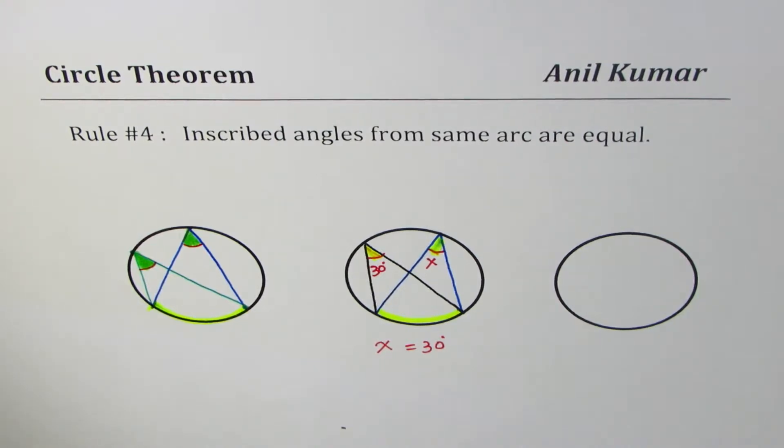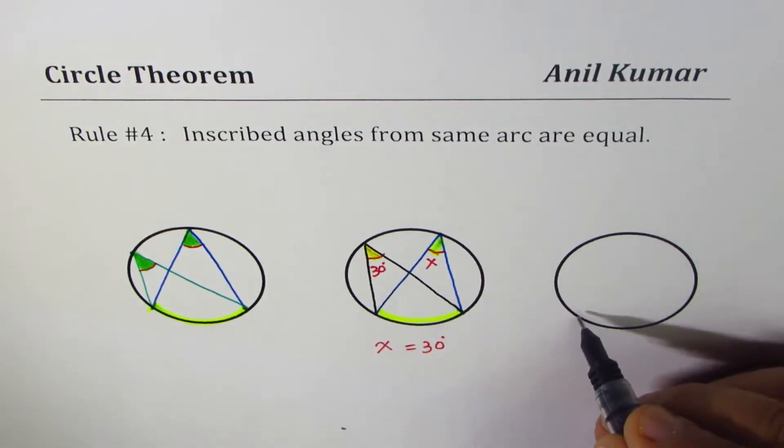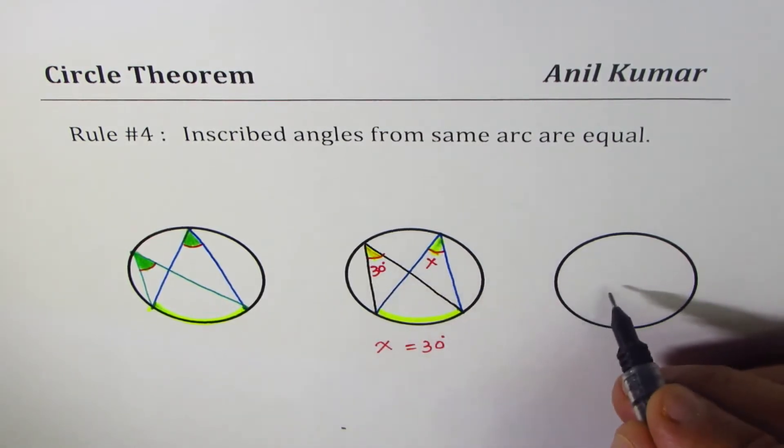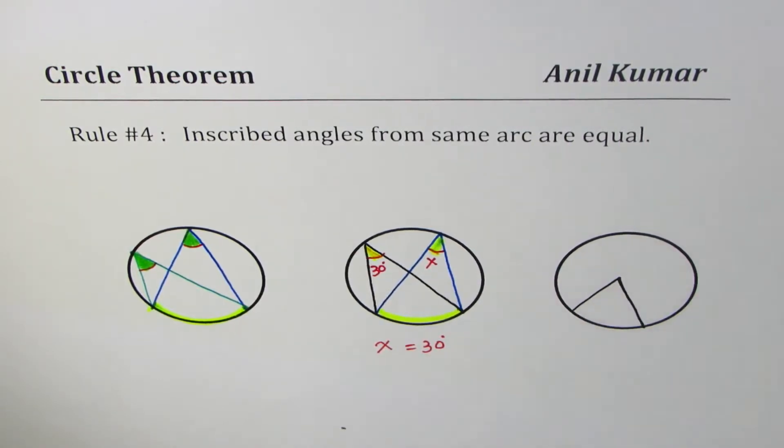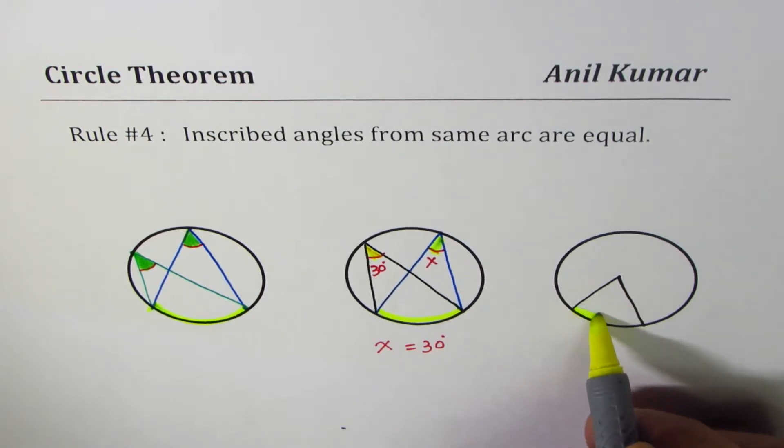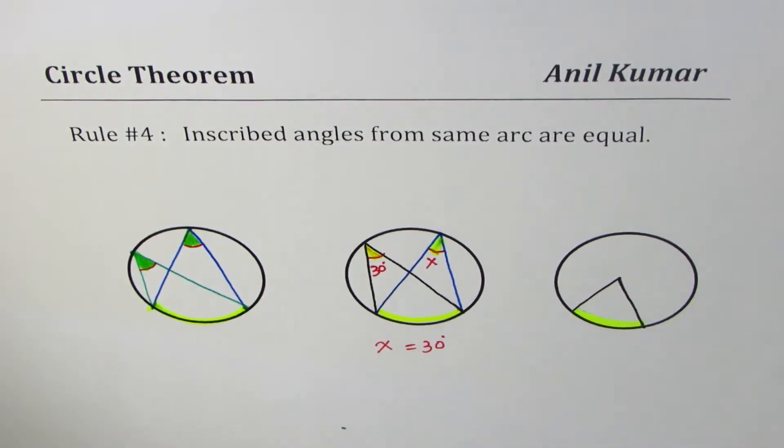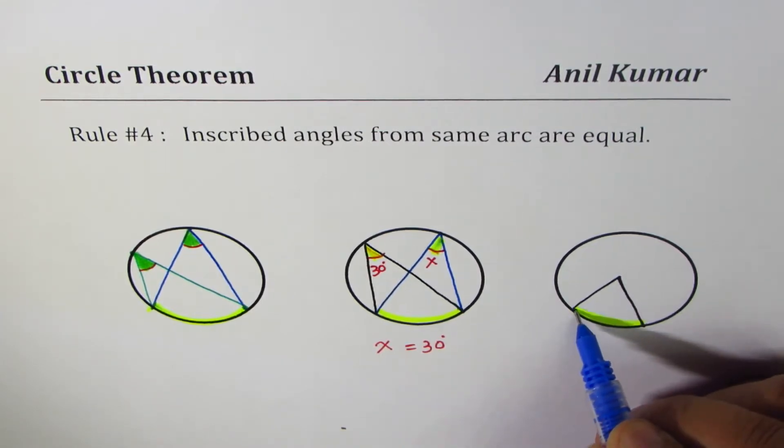So that's what it means. We have learned a couple of rules based on which here is the next question for you. This time what we'll do is we'll make a figure which is slightly different from this. Let's say we have the angles with the arc. I'm taking this as my arc here and I'm making two angles.